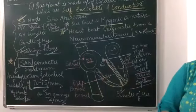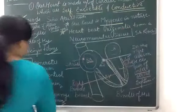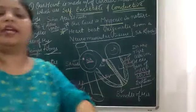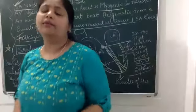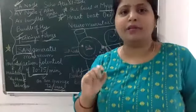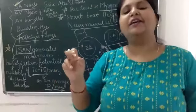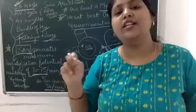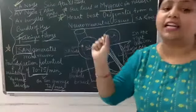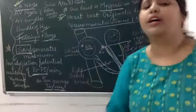Now, in one minute we have the cardiac cycle. If the heartbeat is 72 times per minute, how long does one cardiac cycle take? There are 60 seconds in one minute, so you divide 60 by 72 and you get 0.8 seconds. So the cardiac cycle time is 0.8 seconds — it takes 0.8 seconds to complete one cardiac cycle.